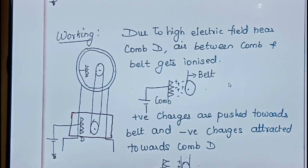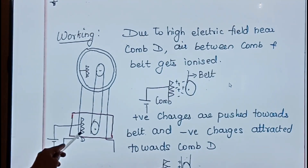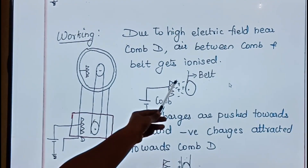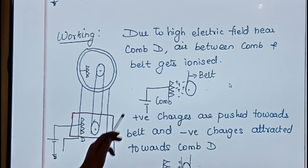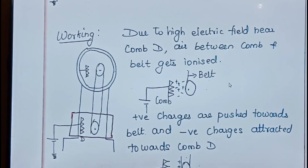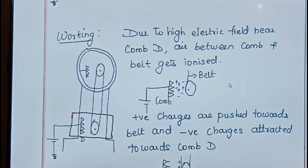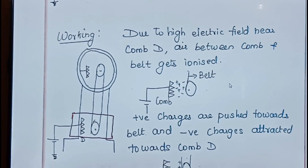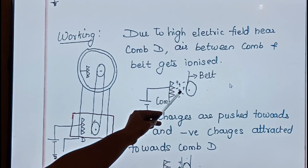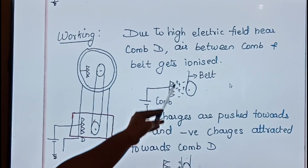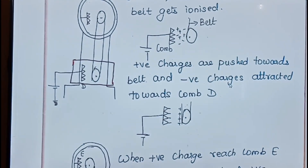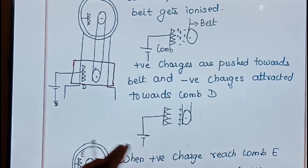The ionized air has positive and negative charges. Positive charges are pushed towards the belt, while negative charges are attracted towards comb D. So the belt carries positive charges upward.